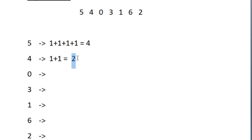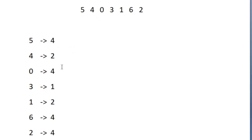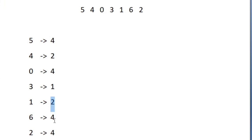So 2 is returned for starting room 1. After finding the number of moves for all remaining starting rooms, the maximum value that has occurred is 4, which is why we print 4 as the output.